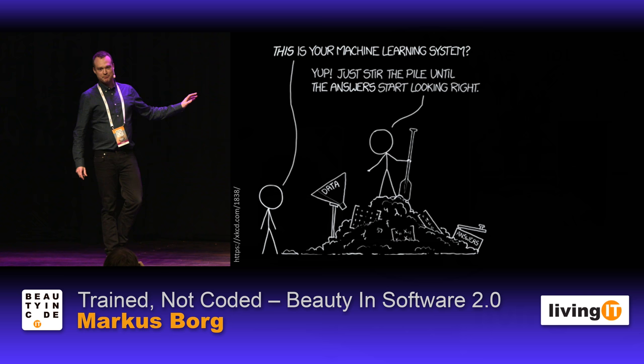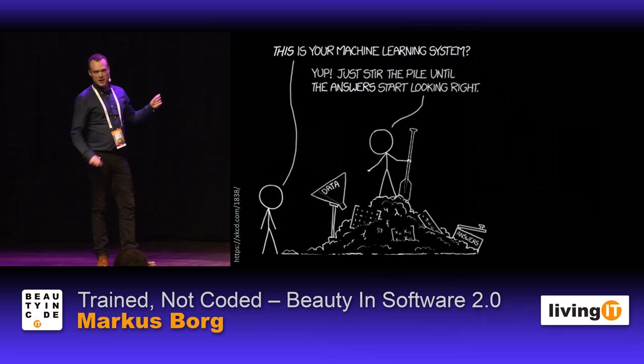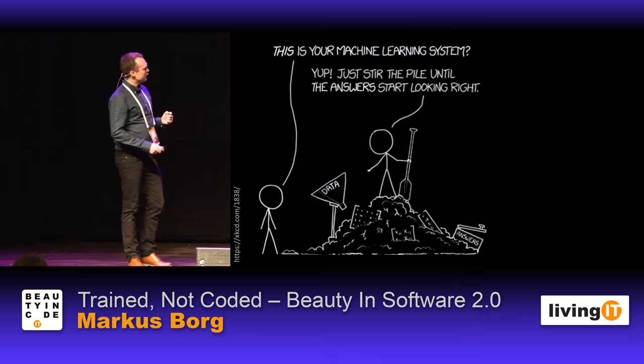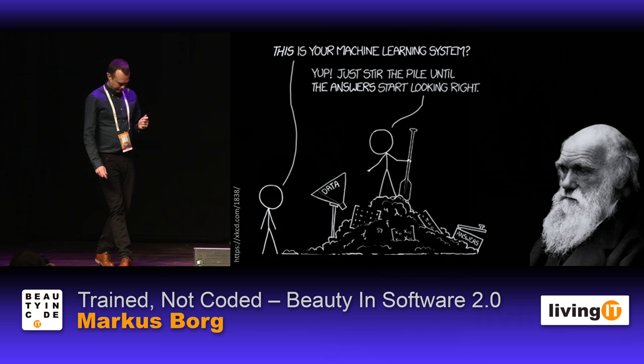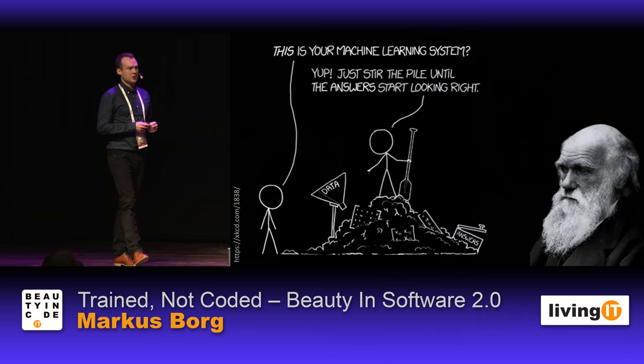I'm also going to talk about machine learning — represented here by this brilliant XKCD strip with a guy standing on top of a pile of data, just stirring until the results start to look all right. And I'm going to talk about Charles Darwin. And since most of my research is in a safety-critical context, I will talk a bit about safety today as well.